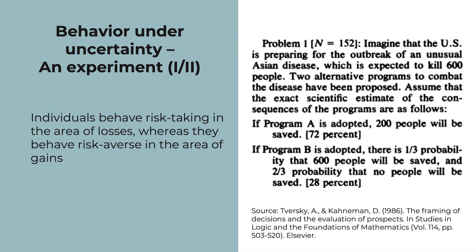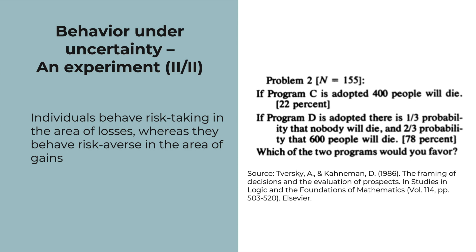The second group had the same cover story but with a differently framed question. If Program C is adopted, 400 people will die. Or if Program D is adopted, there is a one-third probability that nobody will die and a two-thirds probability that 600 people will die. Which program would you choose? Here, the majority chose the second option — the riskier one. So the two decision problems have one thing in common: when choosing between outcomes involving gains we are often risk-averse, whereas we are more risk-taking in situations involving losses. Although the two problems are effectively the same, outcomes are simply framed differently — in problem one by the number of people saved, and in problem two by the number of lives lost.